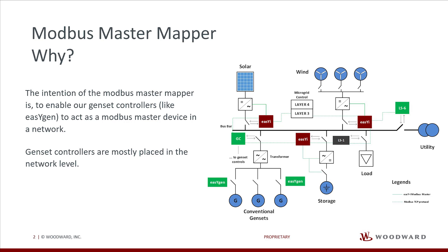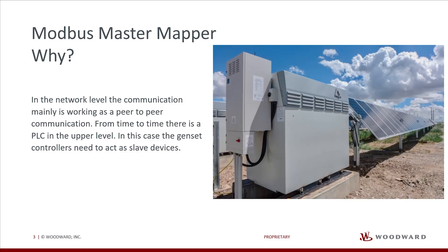The intention of the Modbus Master Mapper is to enable our genset controllers, like EasyGen, to act as a Modbus Master device in a network. Control architectures are mostly designed as cascaded systems. Here you can find different levels where the different controllers are placed. Genset controllers are mostly placed in the network level, where the communication mainly works as a peer-to-peer communication.